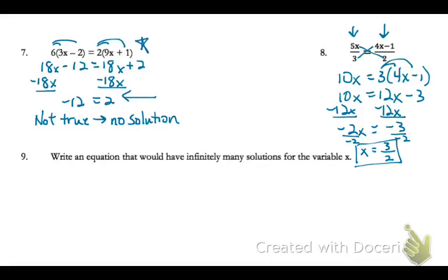So if you think about number 7, we could adjust number 7 just a little bit. On the second step, if that had been 18x minus 12 equals 18x minus 12, then that means the sides are equal to each other. It's a true statement, and it would have infinitely many solutions. So let's go to the original equation.